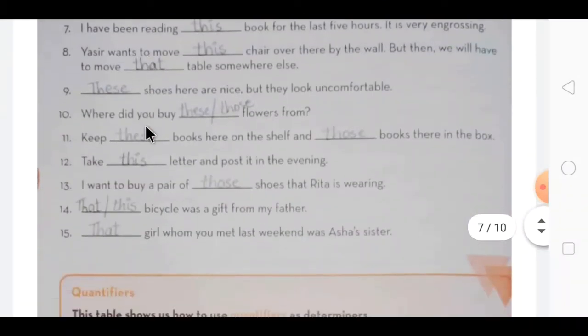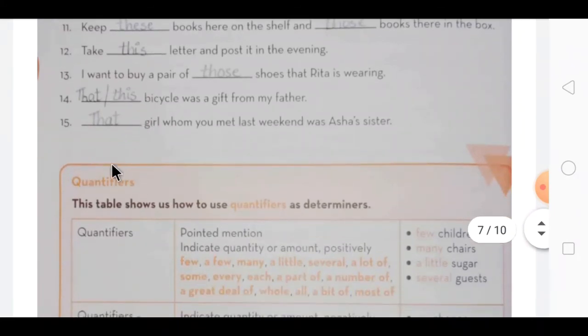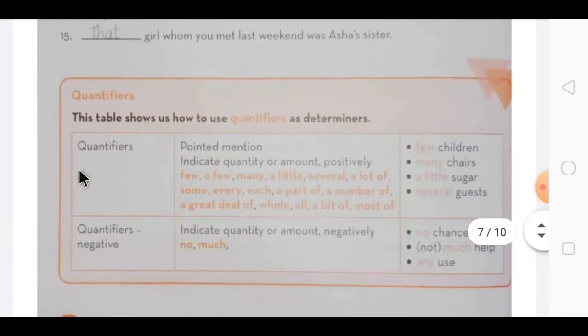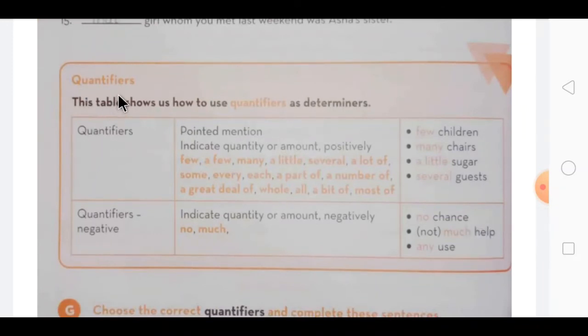Now next type of quantifier, the fourth type of determiner is quantifiers. Quantifiers have two parts. Pointed mention - indicate quantity or amount positively. Which tells in a positive way the quantity or amount, those are called quantifiers. Examples are few, a few, many, a little, several, a lot of, some, every, each, a part of, a number of, a great deal of, whole, all, a bit of, most of. These all are called quantifiers.